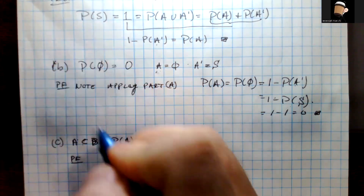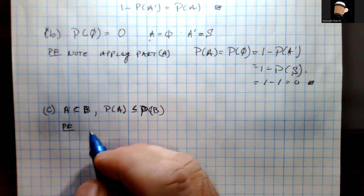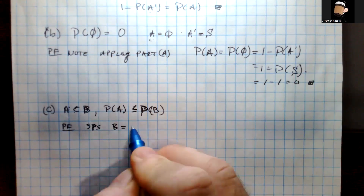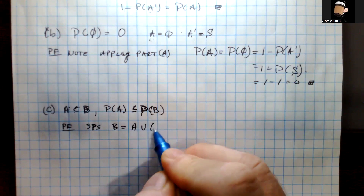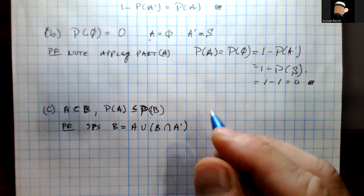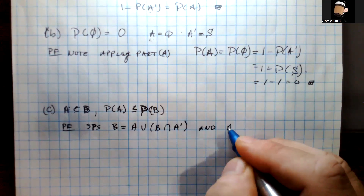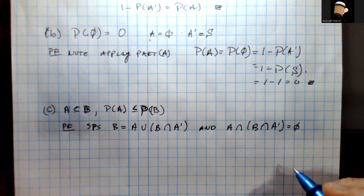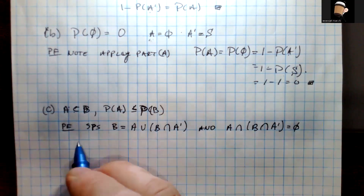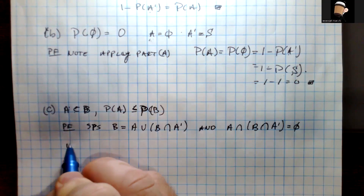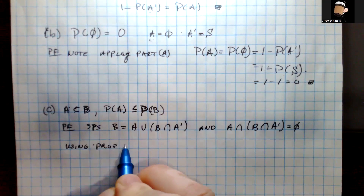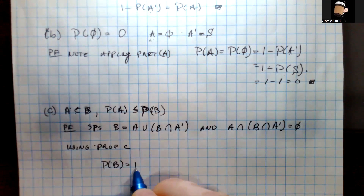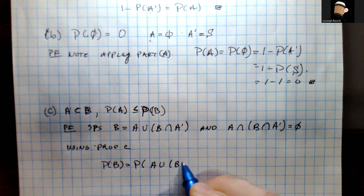Suppose we write B in this interesting way: B equals A union (B intersect A-complement), and we note that A intersected with (B intersect A-complement) equals the empty set. That's really nice because it allows us to use property C. Taking the probability of this, we get P(B) equals P(A union (B intersect A-complement)), which we can write as P(A) plus P(B intersect A-complement).